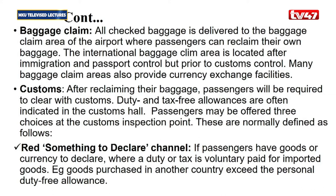We have customs. After reclaiming your baggage, passengers will be required to clear with customs, which is very important. You've shown all your documents at immigration and passport control, reclaimed your baggages, maybe exchanged currency — then you go to customs, where it is a must that everyone passes through. Customs duty and tax-free allowances are often indicated in the customs hall. Passengers may be offered three choices at customs.